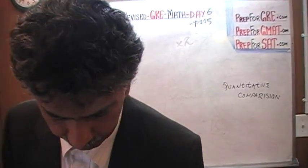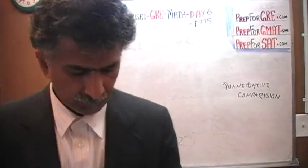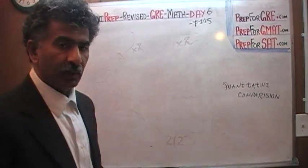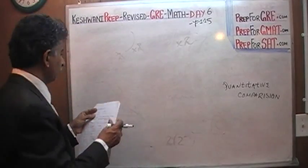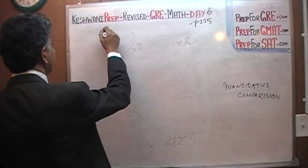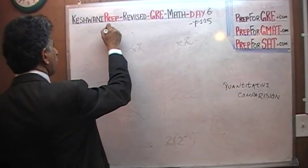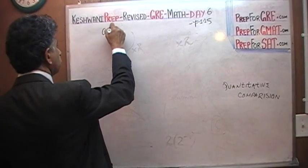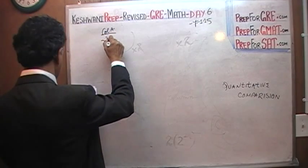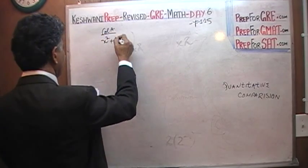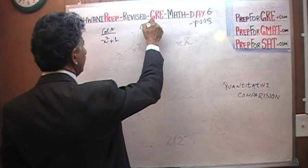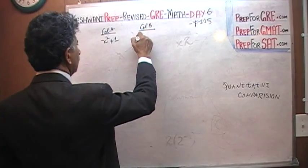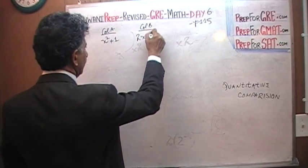On the very top of page 115 you see an algebra problem — two algebraic expressions and we are asked to compare them. The first expression is x squared plus 1, and column B is 2x minus 1.